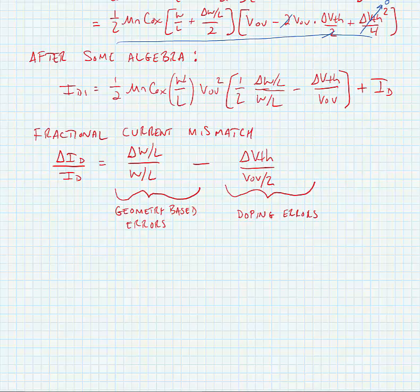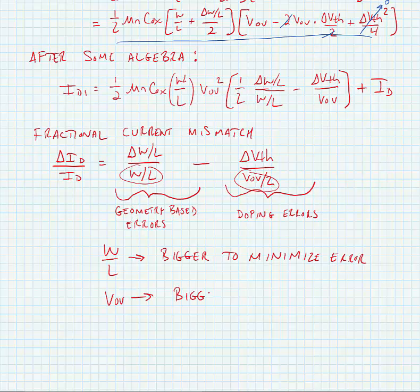Now what we can see here is if we want to minimize the error, clearly we want to increase the denominators to minimize the error or the effect of the error. And so what this means for geometry-based errors is W over L, we want it to be bigger to minimize errors. And the overdrive voltage VOV, we want it to be bigger.